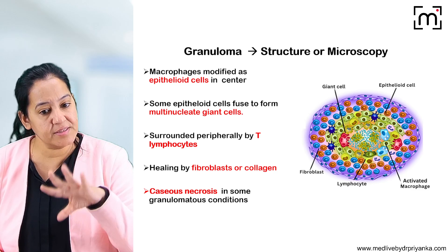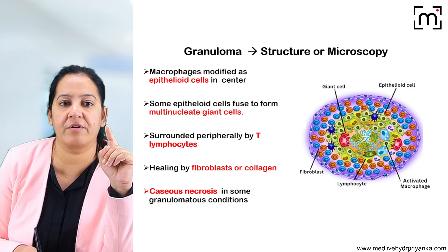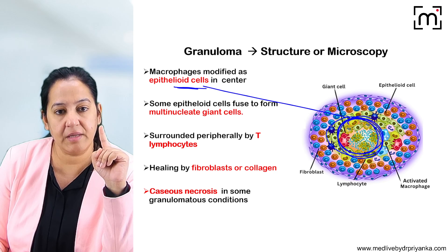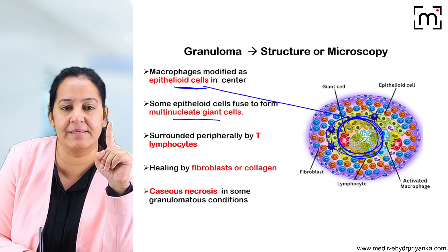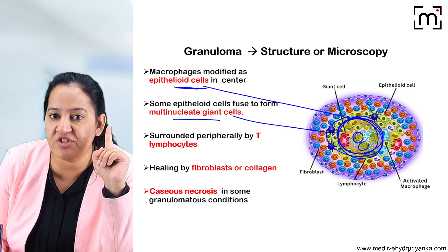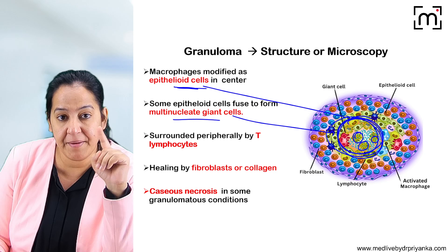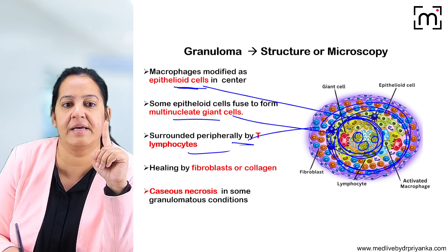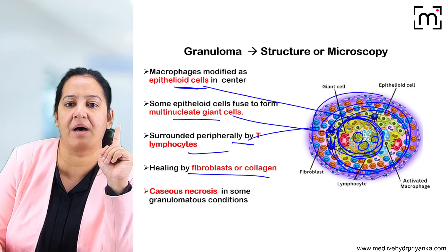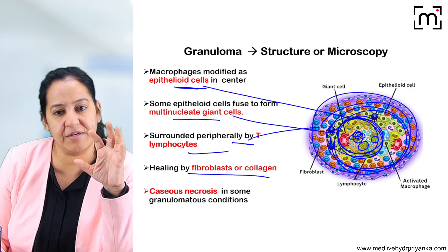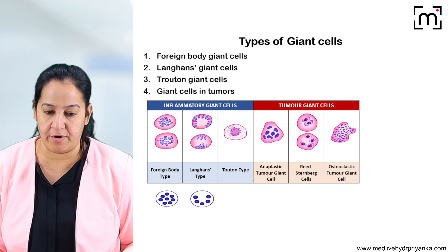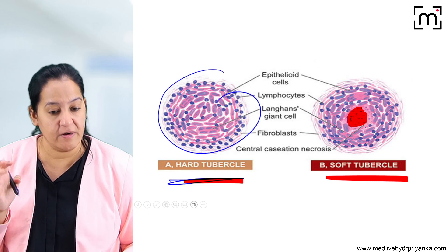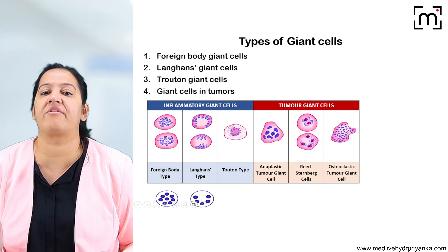This is the microscopy of the granuloma. You can see the center is formed by epithelioid cells along with some giant cells. Surrounding them is the middle zone formed by T lymphocytes, and the outermost zone is formed by fibroblasts. Sometimes there is caseous necrosis at the center. This is the structure of the granuloma — you have to draw it, along with the pathogenesis, types, and definition.